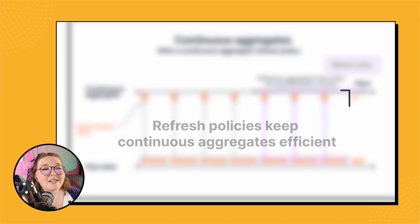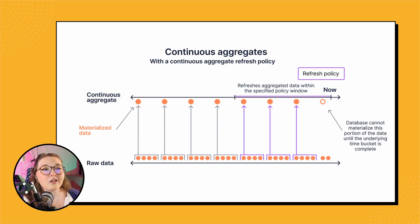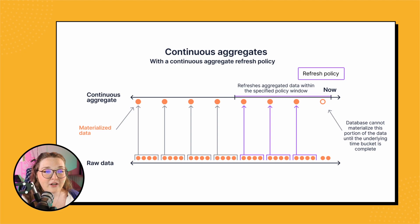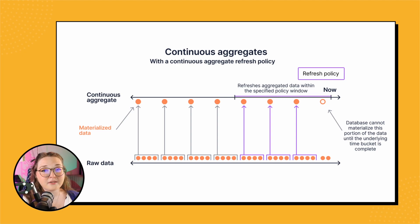Just before we jump into creating the automatic refresh policy and looking at manually refreshing your continuous aggregate, I think it's very valuable to see a graphical representation of what happens when you refresh your data. This chart is very similar to the one we looked at in our previous video. We just have a little bit more data in our underlying hyper table — the bottom line represents our hyper table data plotted over time.